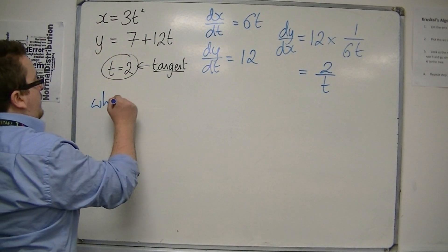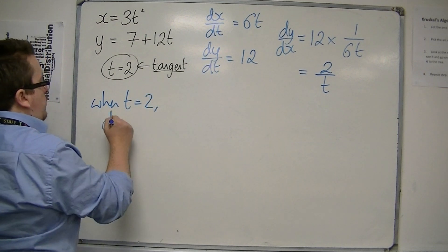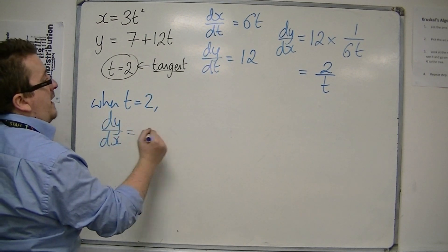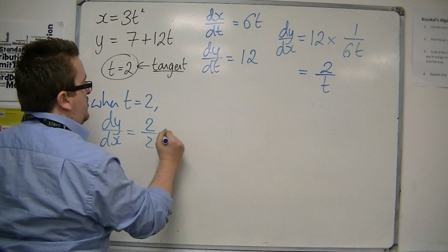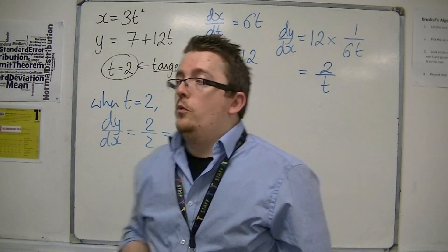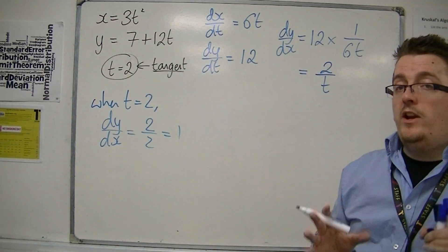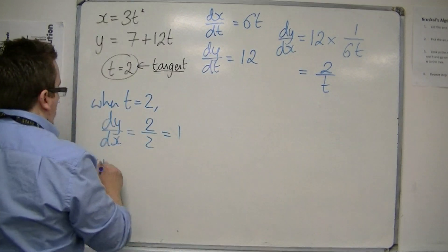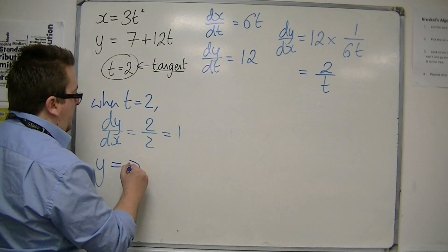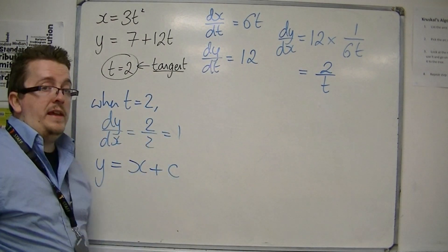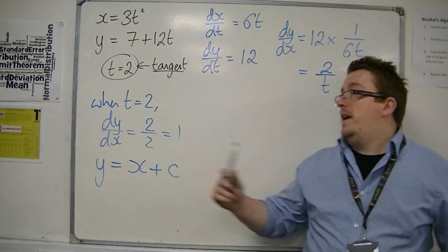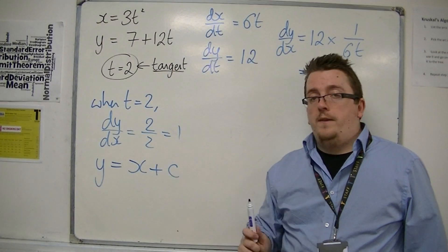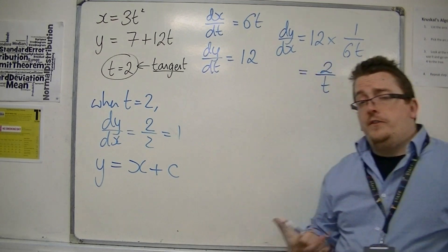So when t is 2, dy by dx will be equal to 2 over 2, which is just 1. So I know that the equation of the tangent will be y is equal to 1x plus a constant c. So I know the gradient of the tangent line is 1. I now need to find c.